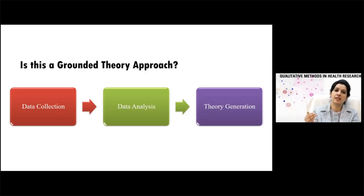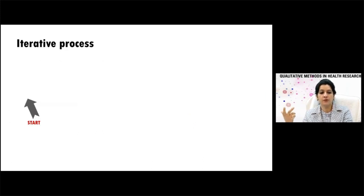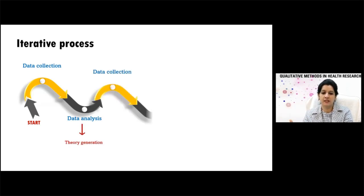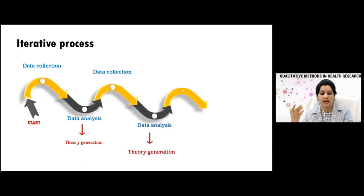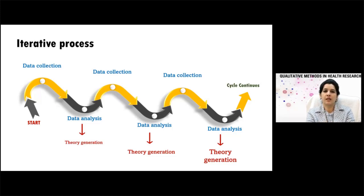Grounded theory uses an iterative approach. In the iterative process, you start data collection, form a theory based on data analysis, then go back and collect more data, do analysis again, generate theory again, and keep repeating. This cycle continues until saturation is reached, and then you form the final theory. This is exactly like solving a murder mystery — you start with the mystery, collect data, have one suspect based on analysis, go back, see more evidence, do more collection, do data analysis, and have some other or refined theory.